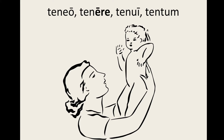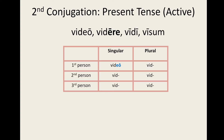And now to conjugate second conjugation verbs in the present tense. We've seen already from the principal parts that the first person singular ending is -eo with a long o. The other five endings are similar to the first conjugation except that the a is replaced with an e. Note that the third person singular and plural forms have short e's.